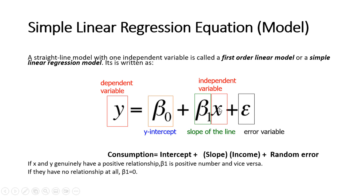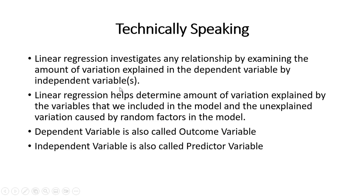Technically speaking, linear regression investigates any relationship by examining the amount of variation explained in the dependent variable by the independent variable or variables. If you have more than one variable it would be called multiple regression; otherwise it is simple linear regression. Linear regression helps determine the amount of variation explained by the variables included in the model and the unexplained variation caused by random factors.